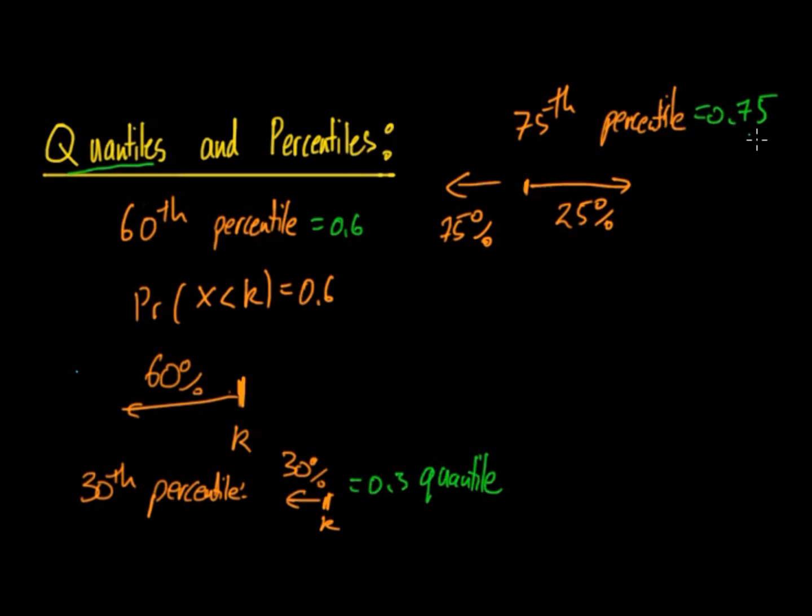So they're equivalent but the quantile is a decimal one and the percentile is a percentage but you don't say percentage. You have to remember to say the 30th and the 60th and the 75th. So it does refer to an exact number such as K so it's not a range.